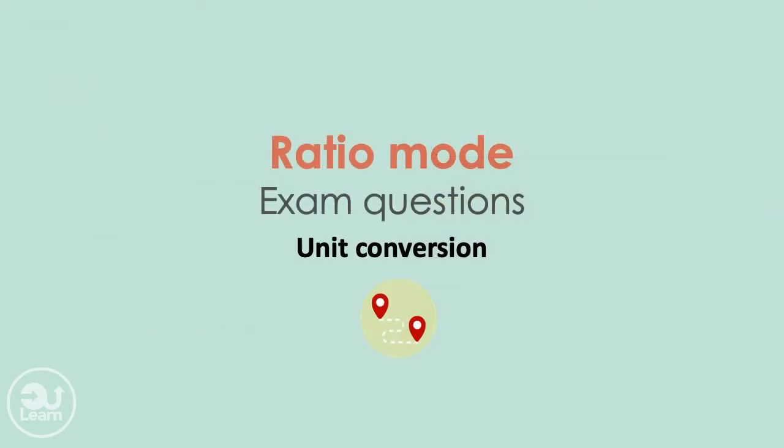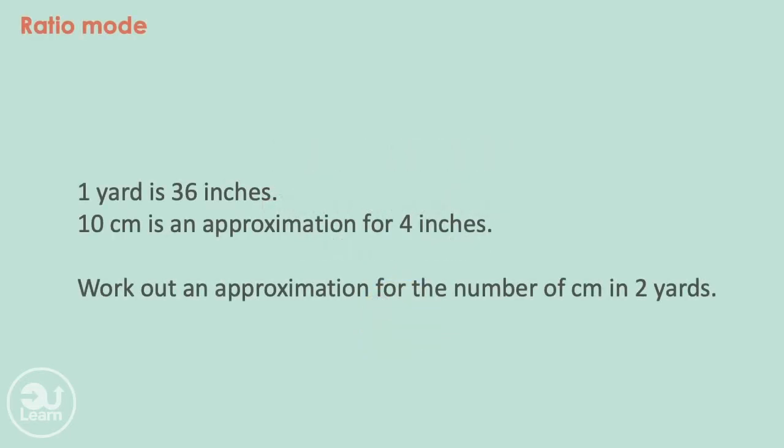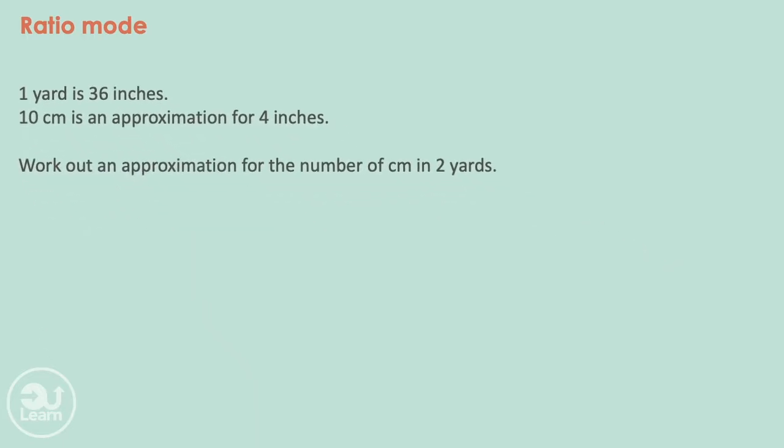A different type of question we can get onto is unit conversion. Looking at this question, one yard is 36 inches. 10 centimeters is an approximation of 4 inches. Work out an approximation for the number of centimeters in two yards. As always, let's place our information into ratios. But with this question, we have two ratios. We would need to find out how many inches in two yards, and then how many centimeters make this new value. Let's start with the two yards.